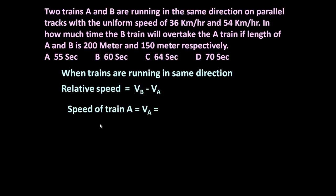Now let us determine VB and VA. Speed of train A is VA equals 36 into 5 by 18. In earlier slides I told you how to convert speed to meter per second. So we got 10 meter per second. Speed of train A is 10 meter per second.